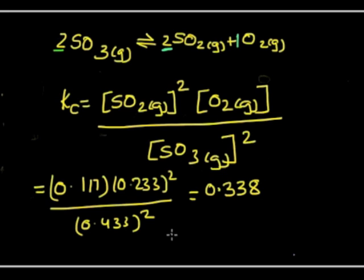Now the next thing we need to do is calculate the units of Kc. If we substitute the units of concentration in this equation, we have mol dm⁻³.